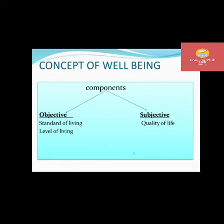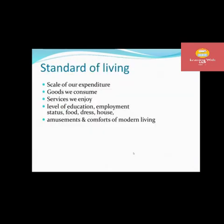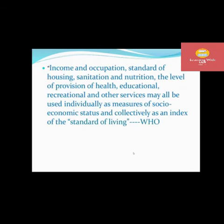There are concepts of well-being with two components: objective and subjective. Under objective, there is standard of living and level of living; under subjective, there is quality of life. The standard of living covers scale of expenditure, goods consumed, services enjoyed, level of education, employment status, food, dress, housing, amusements, and comforts of modern living. Income, occupation, housing, sanitation, nutrition, and the provision of health, educational, and recreational services may all be used as measures of socioeconomic status and collectively as an index of the standard of living — as defined by the WHO.